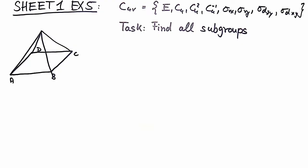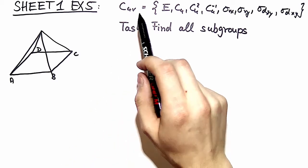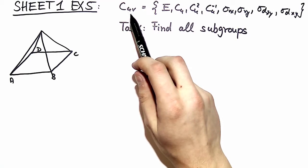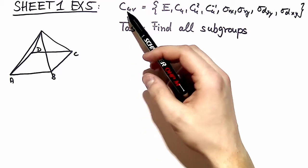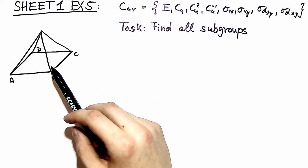Welcome to exercise 5 of problem sheet 1. This is probably the most interesting task in exercise sheet 1 and we're asked to investigate the group C4V which corresponds to a pyramid in 3D with a square base.